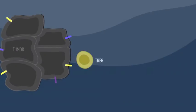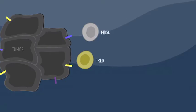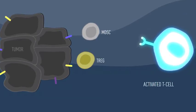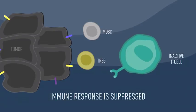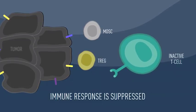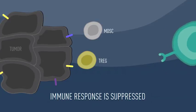Tumors are protected from T cell attack. The immune system generates regulatory T cells, or Tregs, and myeloid-derived suppressor cells, or MDSCs, which shield the tumor by suppressing the immune response.